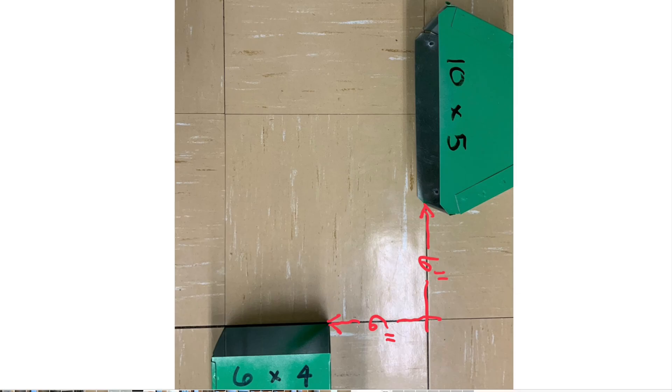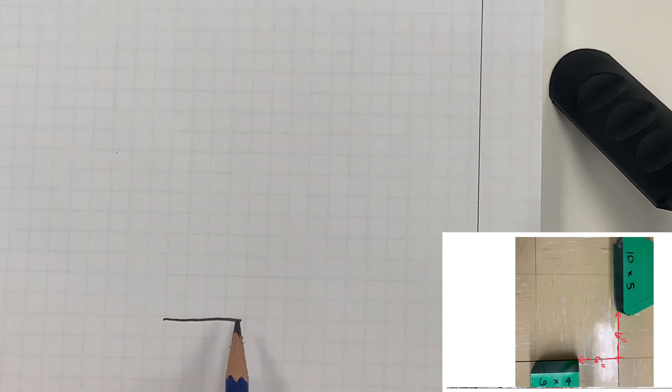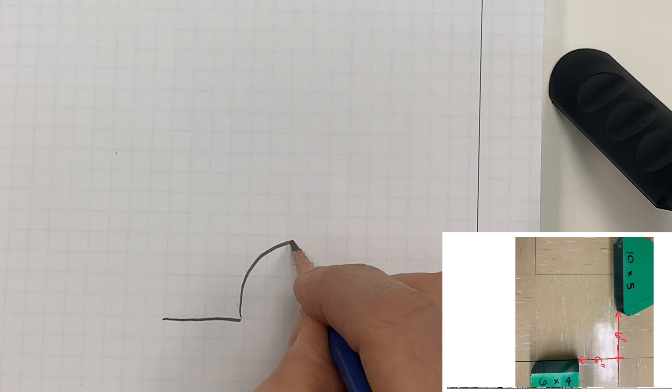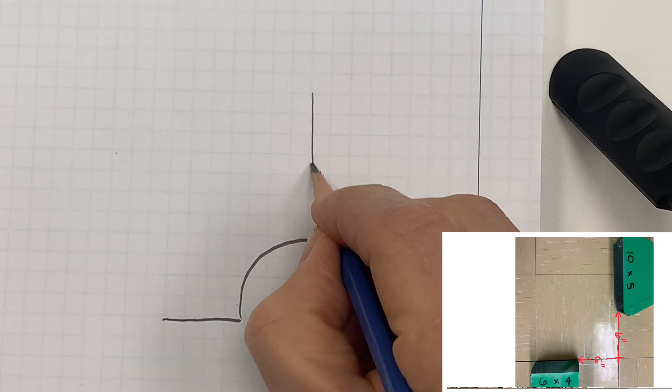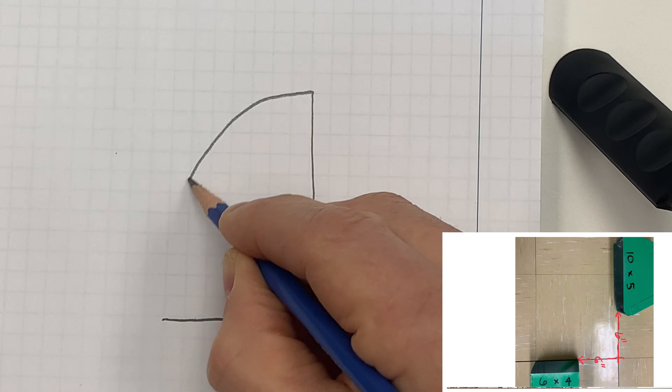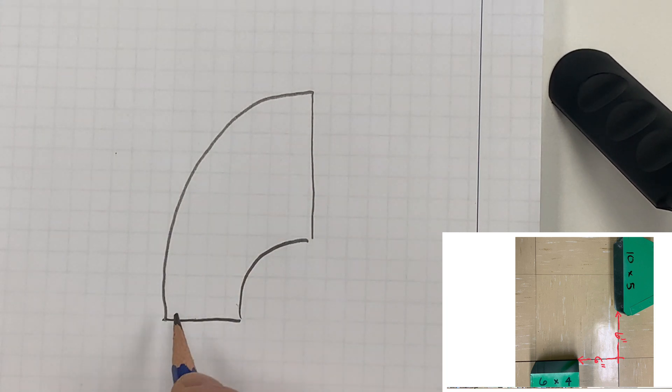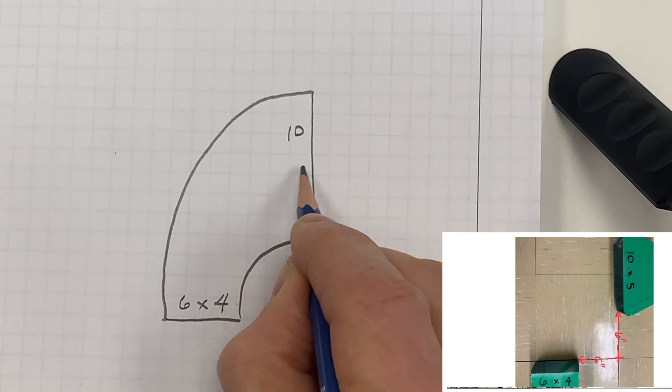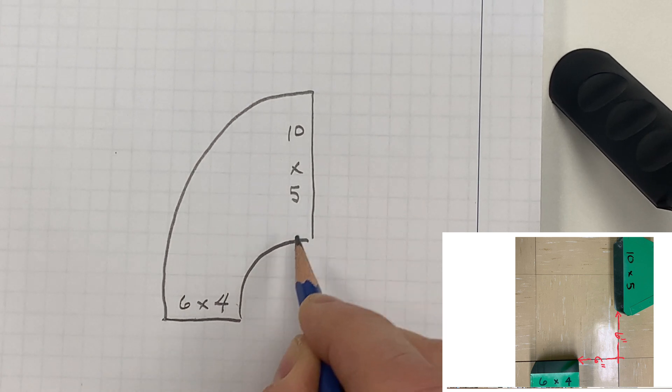This scenario we've got a 10 by 5 duct going to a 6 by 4 duct. I'm going to make a 90 degree elbow to connect these two ducts. One end is 6 by 4, four inches deep, and this is 10 inch wide by five deep.